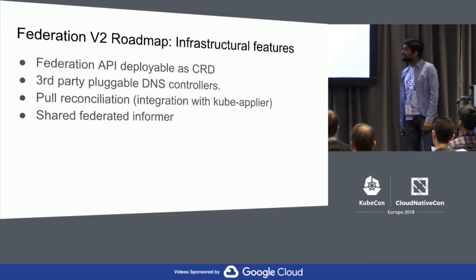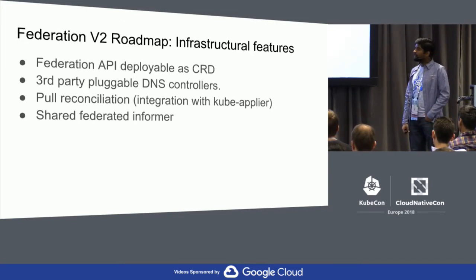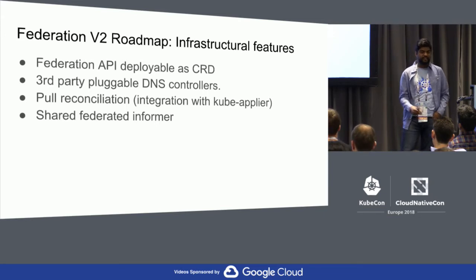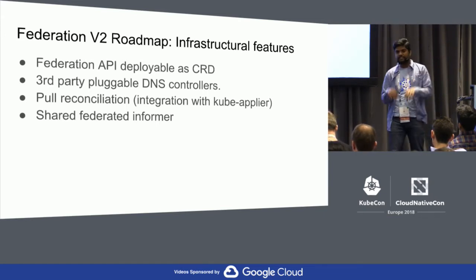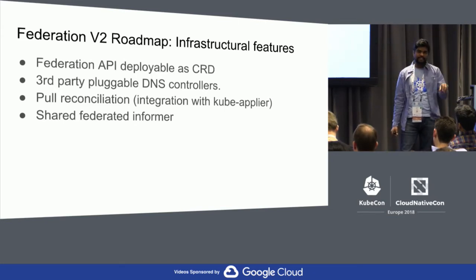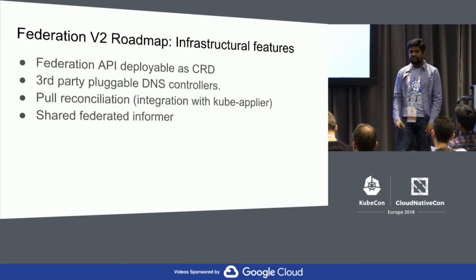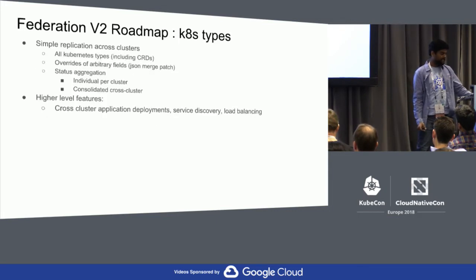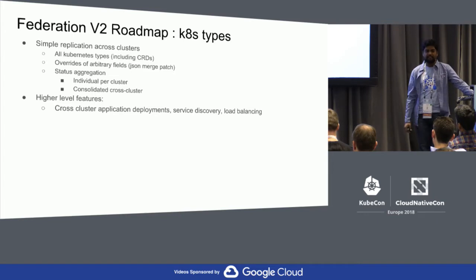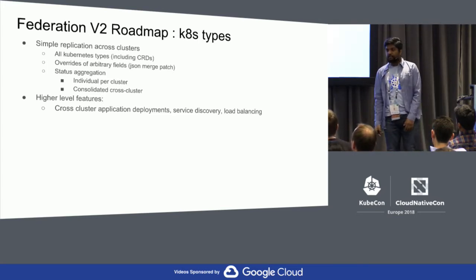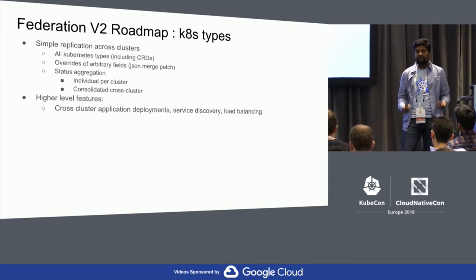The roadmap is to implement all of these APIs as CRDs, implement a third-party pluggable DNS controller, and explore kube-applier — an open source tool from Box that pulls changes rather than the global control plane pushing changes. We're also trying to come up with a shared federated informer for federation controllers. There are still issues we are figuring out, like status aggregation — people want individual per-cluster status as well as aggregated status, and how we surface that in the API.